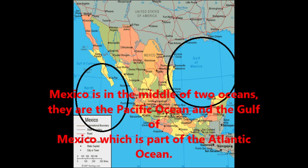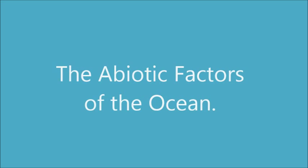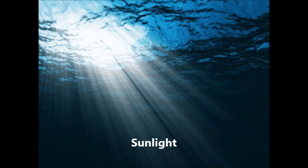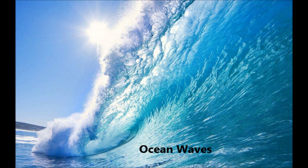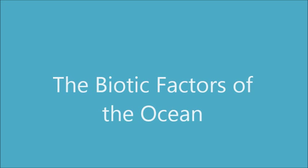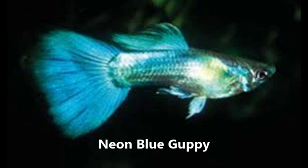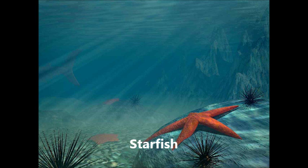Mexico is situated between two oceans: the Pacific Ocean and the Atlantic Ocean. The Abiotic Factors of the Ocean: sunlight and ocean waves. The Biotic Factors of the Ocean: marlin, the neon blue goby, and the starfish.